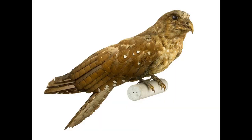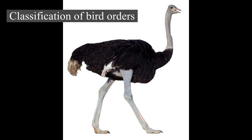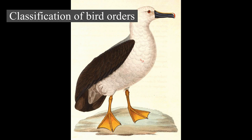Classification of bird orders. The classification of birds is a contentious issue. Sibley and Ahlquist's Phylogeny and Classification of Birds (1990) is a landmark work on the subject. Most evidence seems to suggest the assignment of orders is accurate, but scientists disagree about the relationships between the orders themselves. Evidence from modern bird anatomy, fossils, and DNA have all been brought to bear on the problem, but no strong consensus has emerged. More recently, new fossil and molecular evidence is providing an increasingly clear picture of the evolution of modern bird orders.